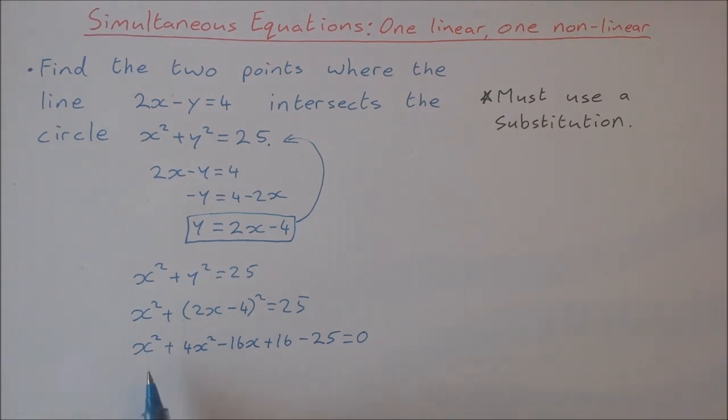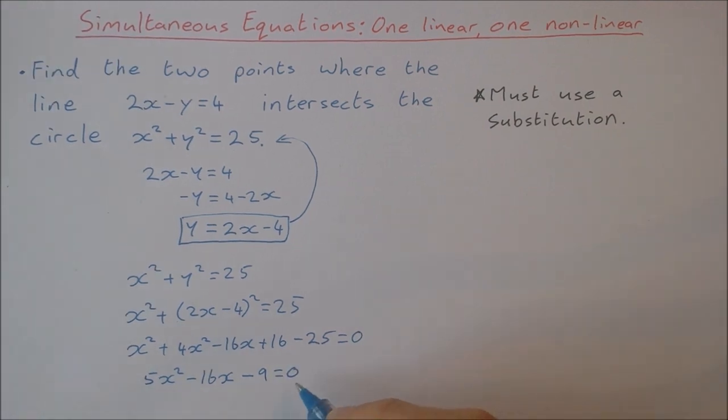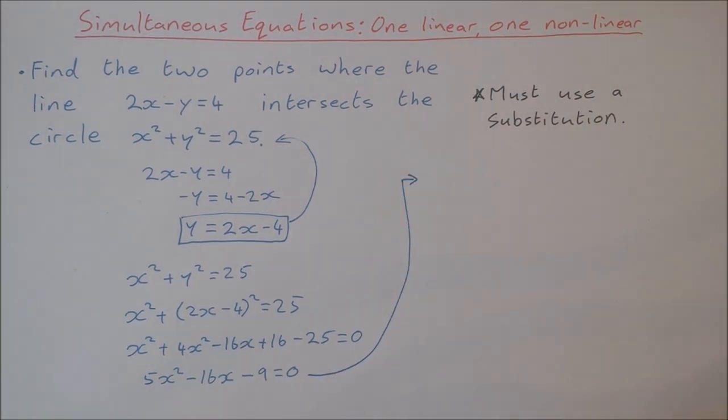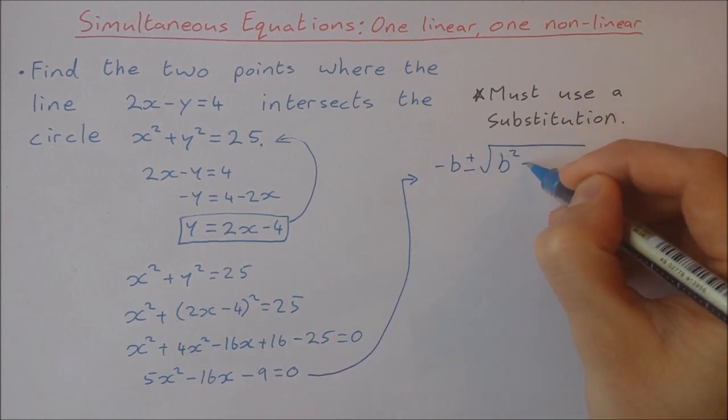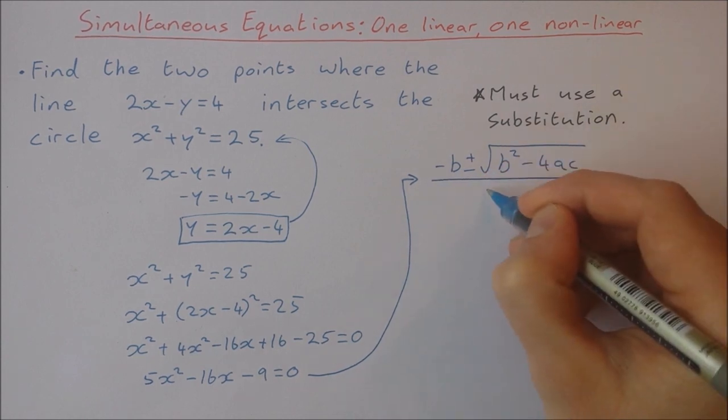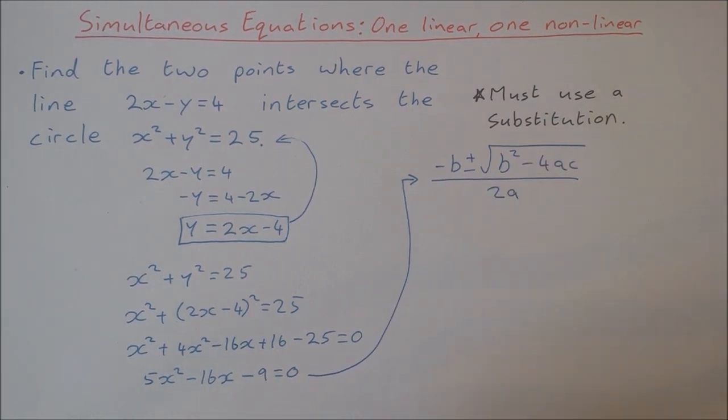Tidying things up here. x squared plus 4x squared is 5x squared, minus 16x, and then plus 16 minus 25 is minus 9. Now to solve this equation here I don't see any factors jumping out at me, so I'm going to go straight to the quadratic formula which is minus b plus and minus the square root of b squared minus 4ac all over 2a. And this is a, this is b and this is c.